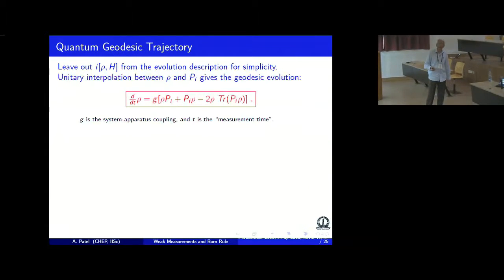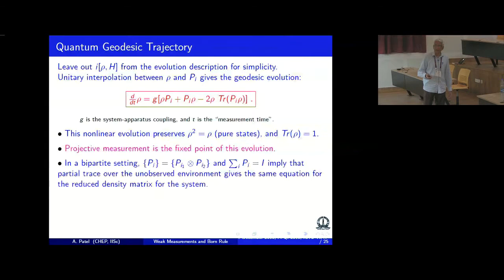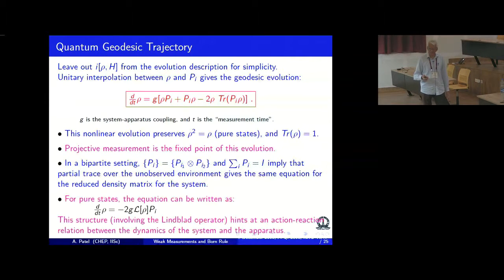The equation has a very simple structure. There is a geodesic part which is nothing but the great circle on that unit sphere going from the initial state to the eigenstate. And this is the differential equation which generates the geodesic. It has various built-in properties. It preserves rho squared equal to rho. Projective measurements are the fixed point of the evolution. The equation is linear in the projection operator. So environment just decouples because sum over PI equal to one. And if I do a reduced trace over the environment, those degrees of freedom don't appear in the system at all. And these properties are actually related to a picture which inverts the role of the system and the apparatus.